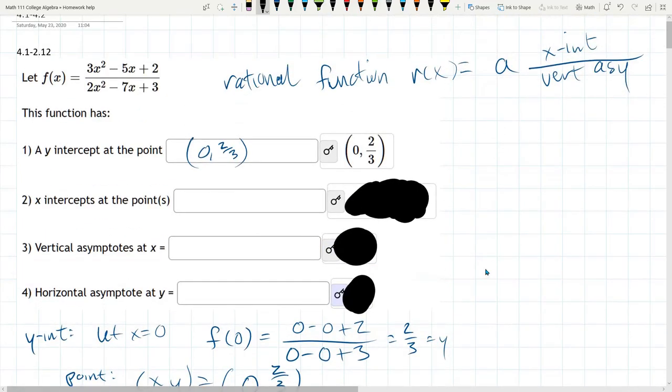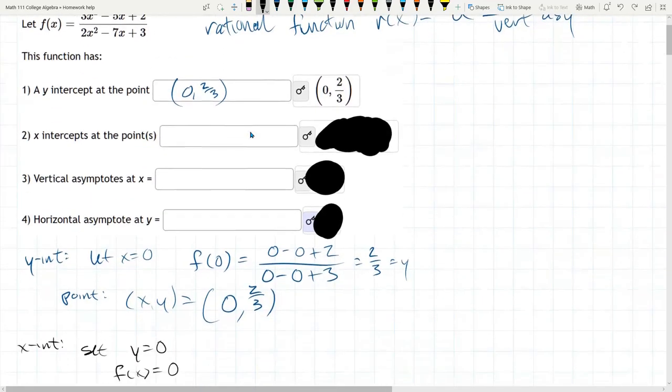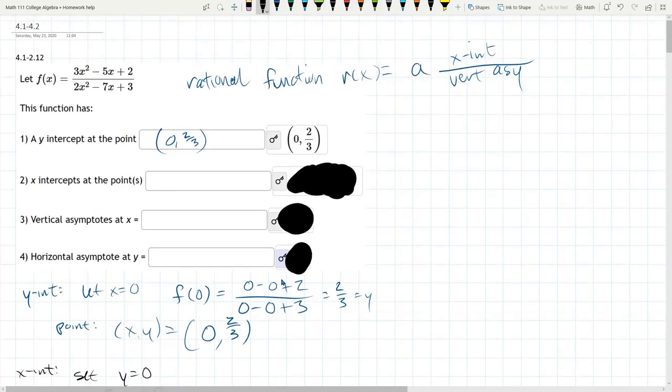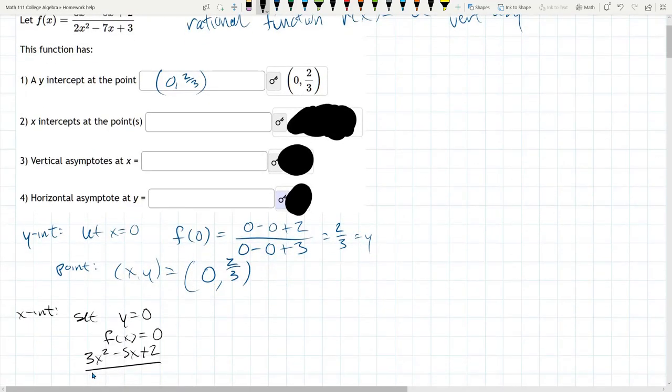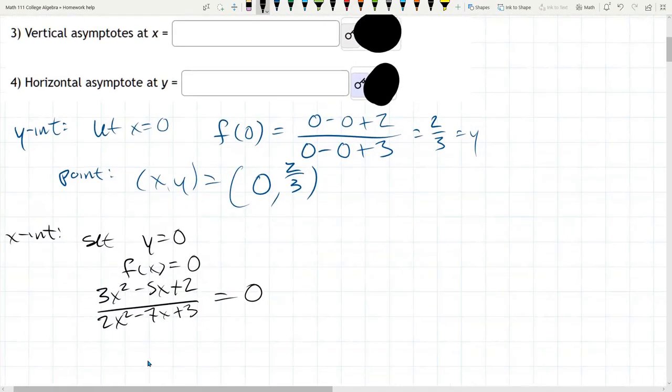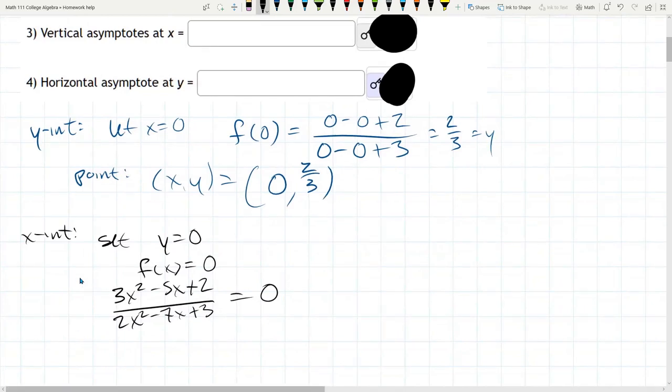And our function right here, I'm going to copy that down. 3x squared minus 5x plus 2 divided by 2x squared minus 7x plus 3. And this is supposed to equal zero. A fraction equaling zero. When does a fraction equal zero? When the numerator is zero.